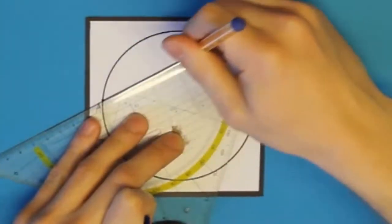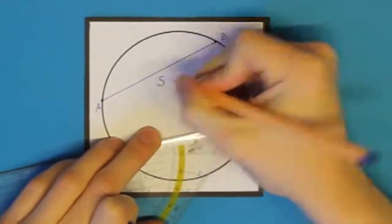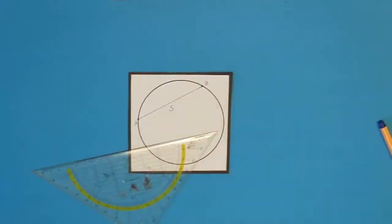Also, was machen wir hier? Wir zeichnen eine Kreissehne, wie ihr schon wisst. Und wir beschriften diese Szene auch gleich mit einem kleinen S.